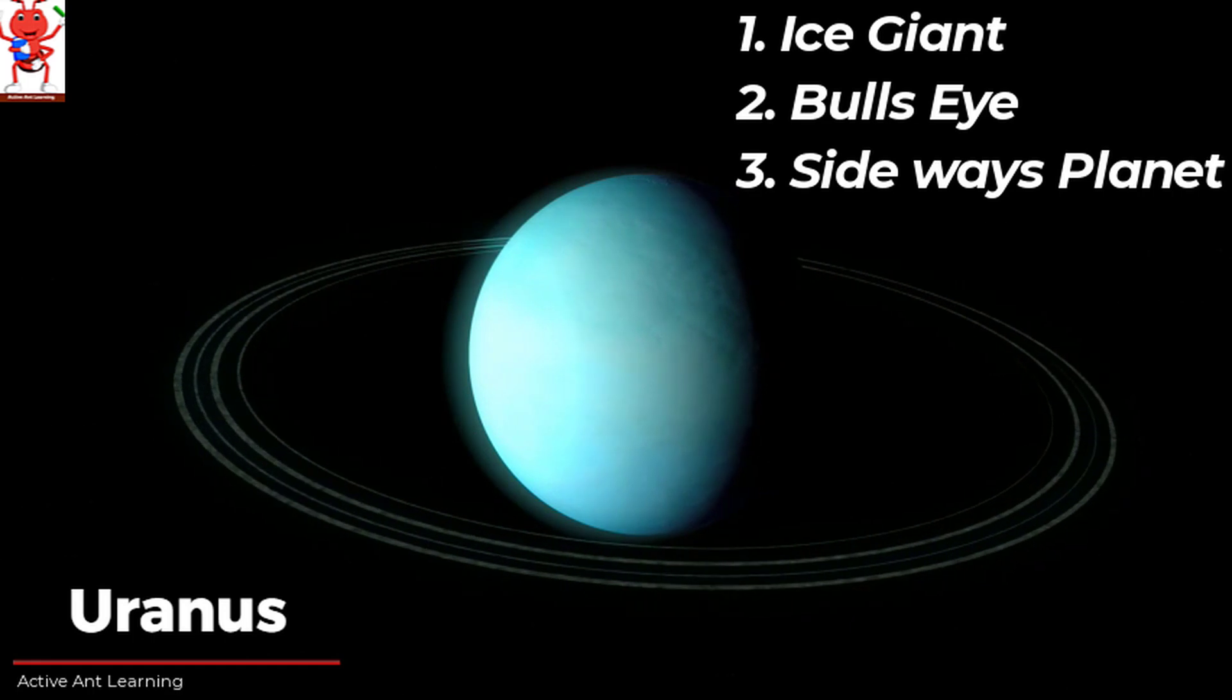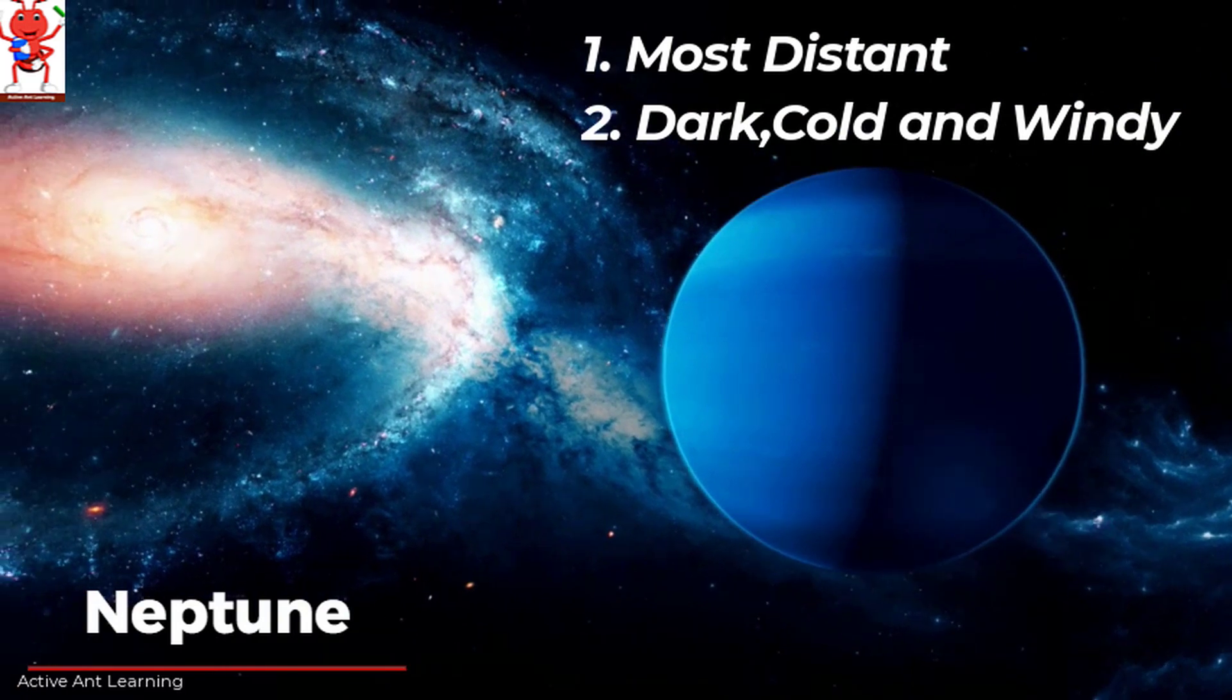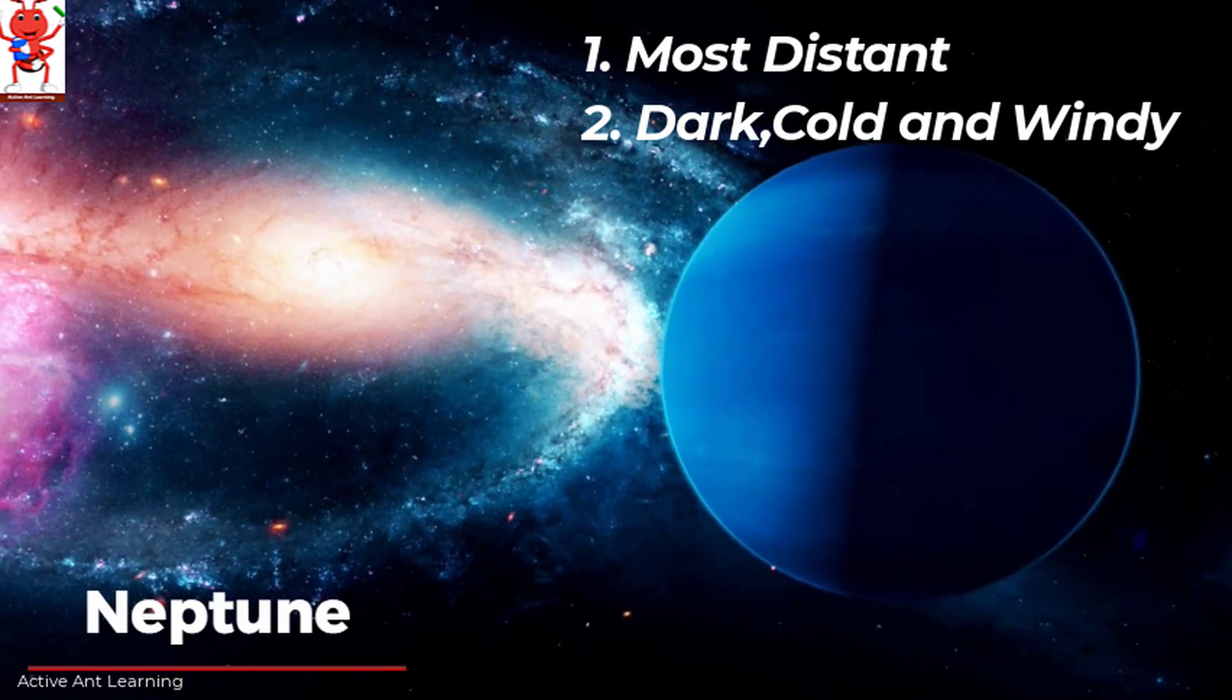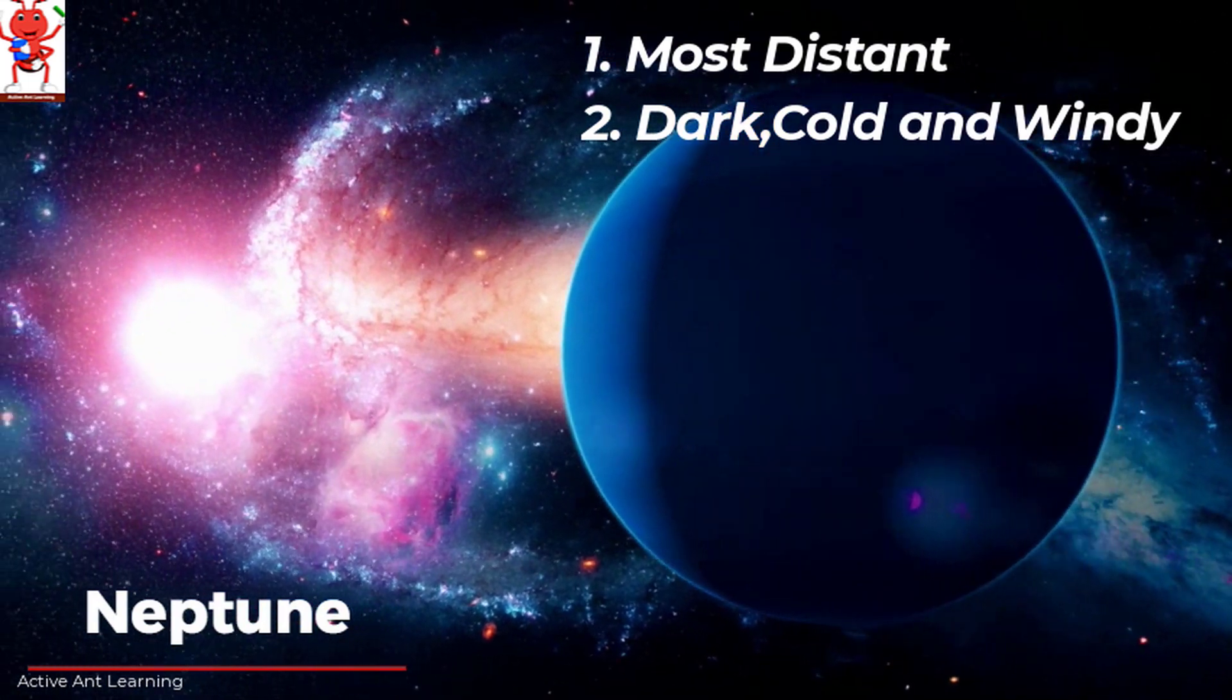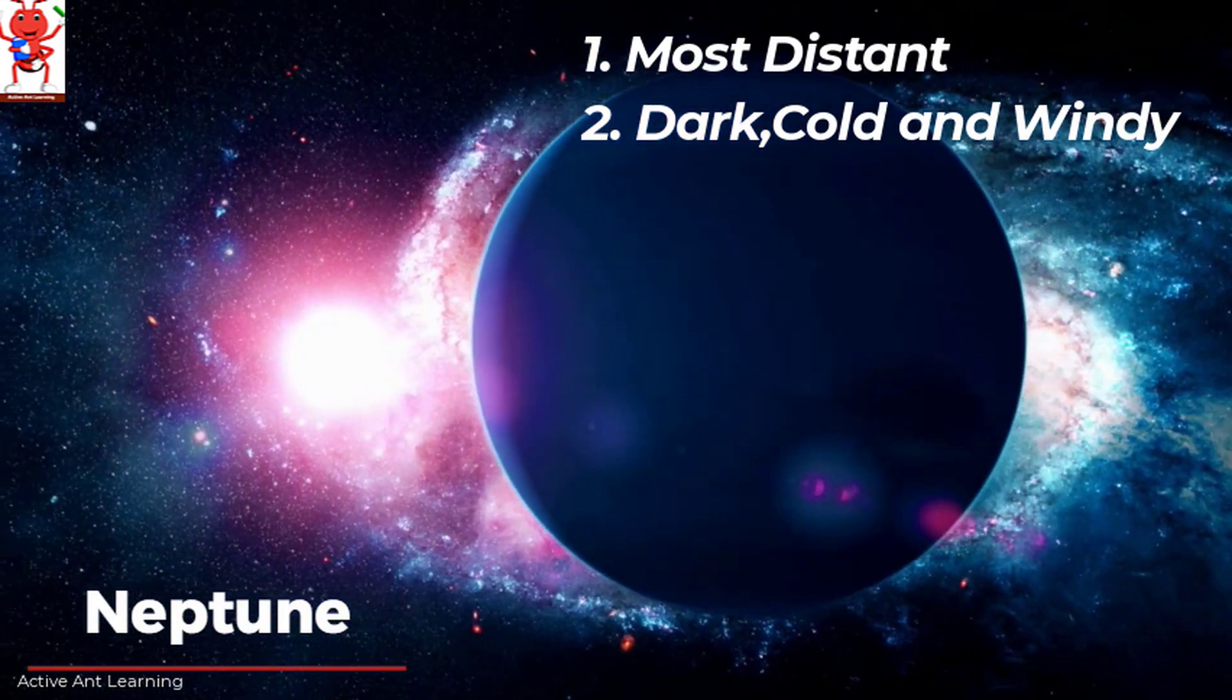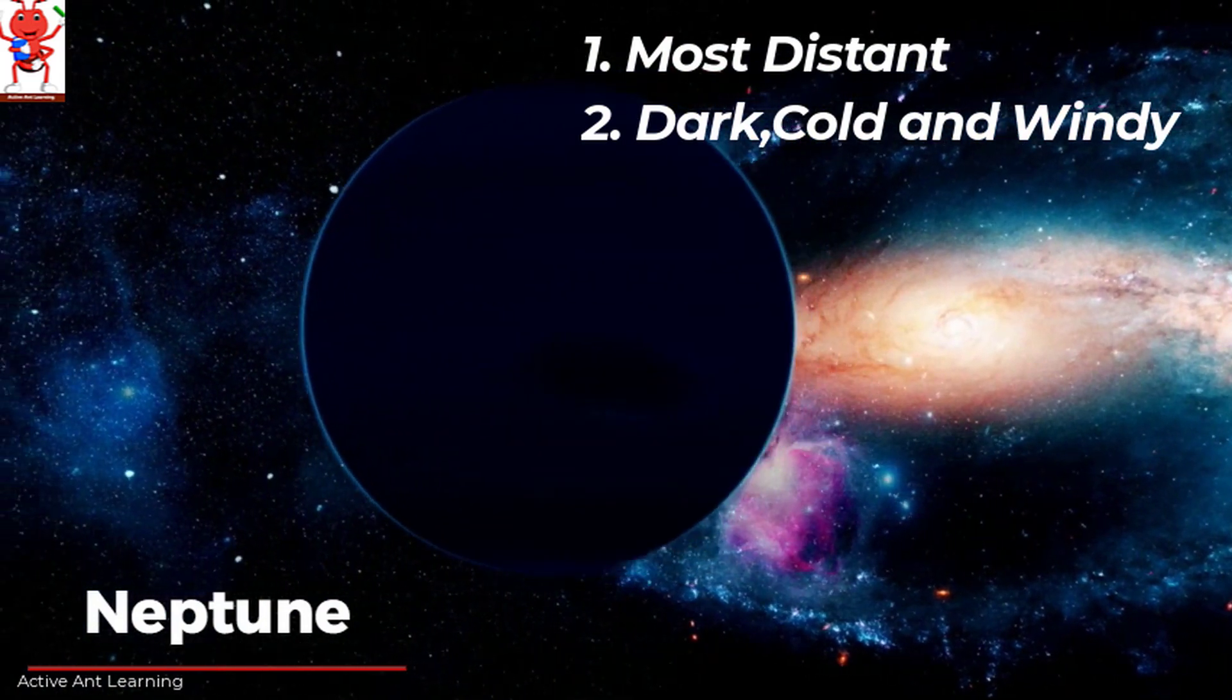Neptune is the eighth and most distant planet from the sun. Neptune is dark, cold and very windy. It is very similar to Uranus. That's why Uranus and Neptune are called twin brothers.